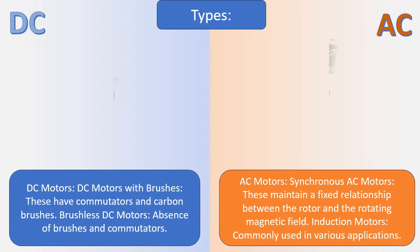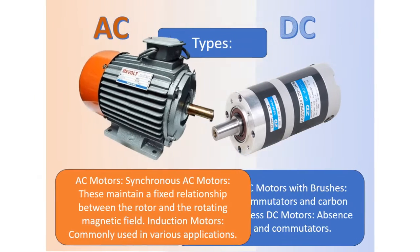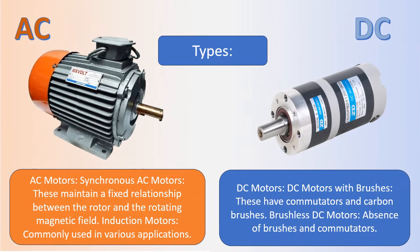Types of AC motors: Synchronous AC motors maintain a fixed relationship between the rotor and the rotating magnetic field. Induction motors are commonly used in various applications. DC motors with brushes have commutators and carbon brushes.